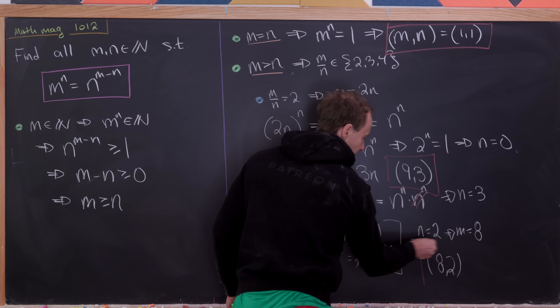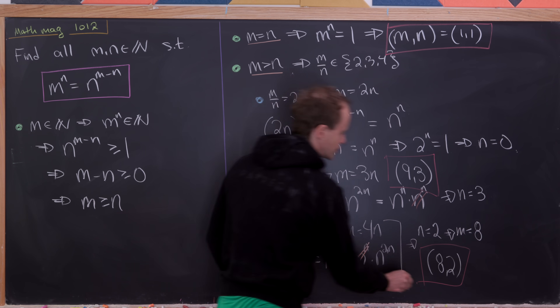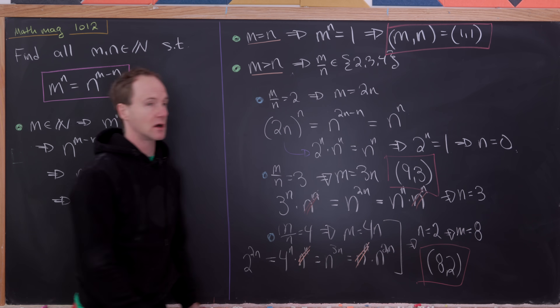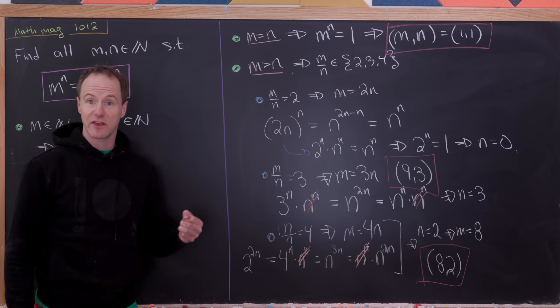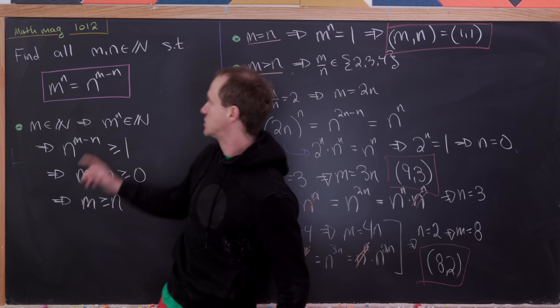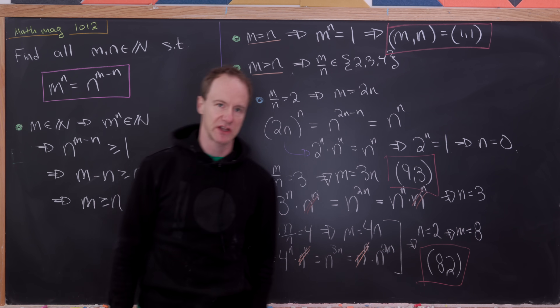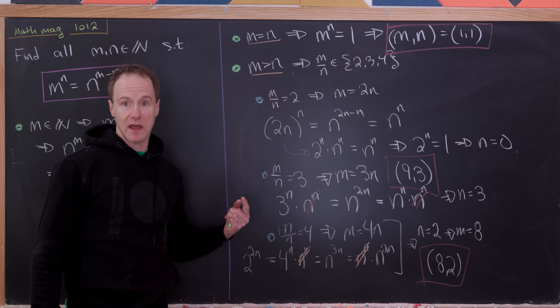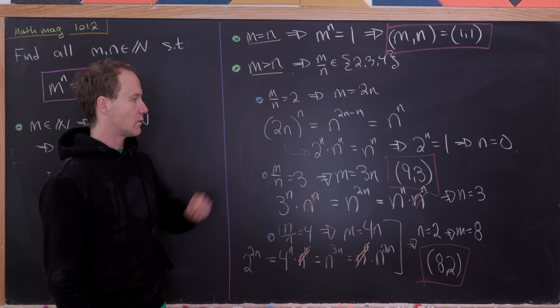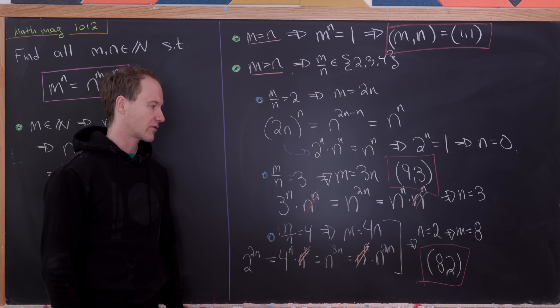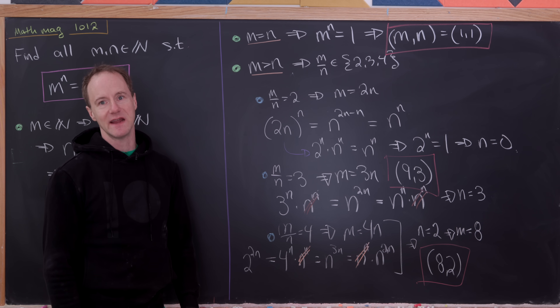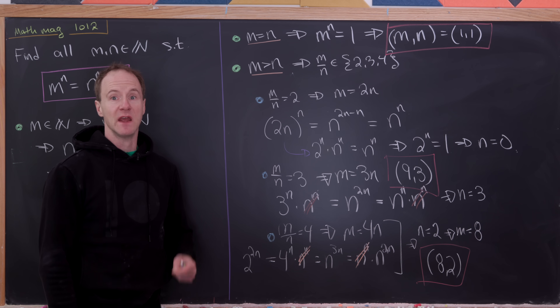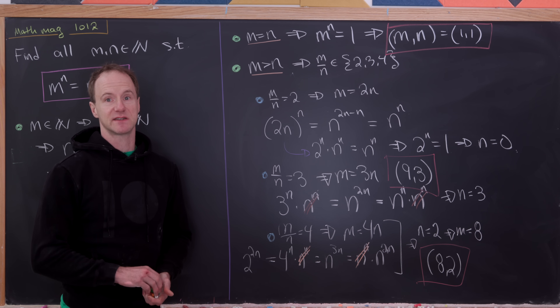So there we have it. We've shown that there are exactly three solutions to our original equation: (m, n) equals (1, 1), (9, 3), or (8, 2). And that's a good place to stop.